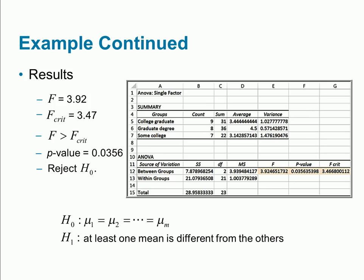We're doing an ANOVA analysis for single factor. College graduates: there are nine of them, the total is 31, and the average is 3.44. The variance for college graduates is 1.027 in terms of employee satisfaction. There are eight graduate degree owners, the total is 36, the average is 4.5, and the variance is 0.57.